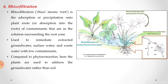Rhizofiltration — 'rhizo' means roots — is the absorption or precipitation of contaminants into the plant root from the solution surrounding the root zone. It is used to remediate extracted groundwater, surface water and wastewater with low contaminant concentrations. Compared to phytoextraction, here plants are used to address groundwater rather than soil. The network of roots forms a filter, and this filtering action treats the wastewater.